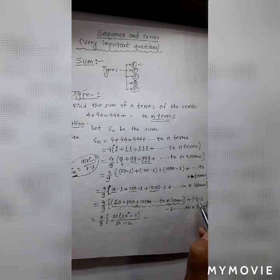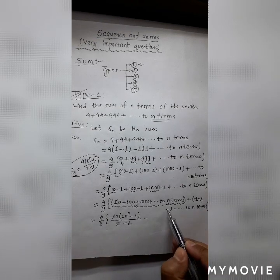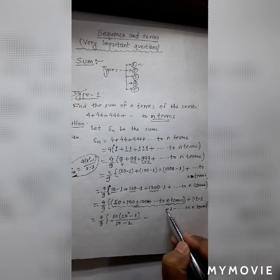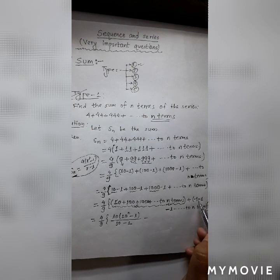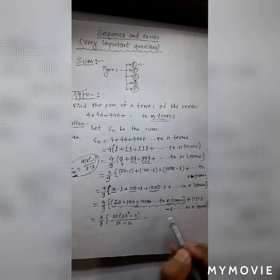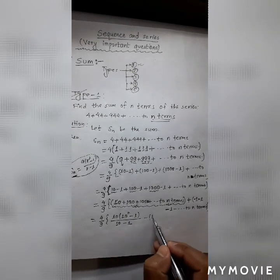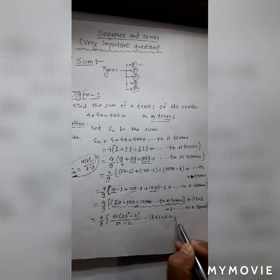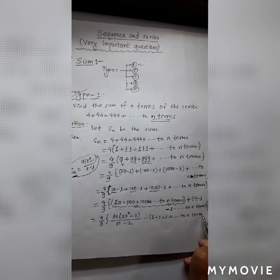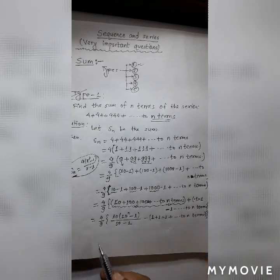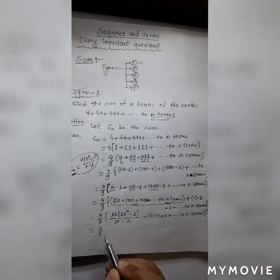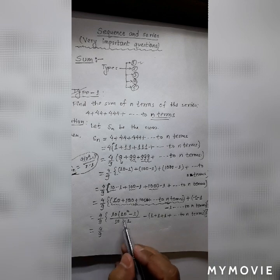Now for the second series: we have minus 1, minus 1, minus 1 for n terms. Taking the minus sign common, inside the bracket we have 1 plus 1 plus 1 up to n terms. So the sum of this series is minus n, because adding 1 exactly n times gives n. Therefore 4 by 9 remains as the overall factor.